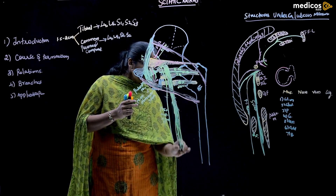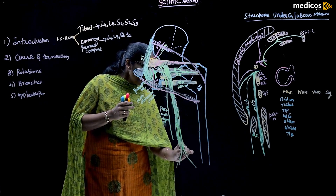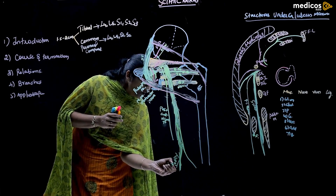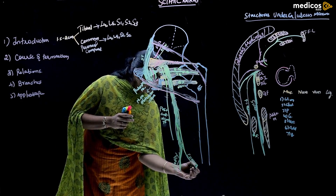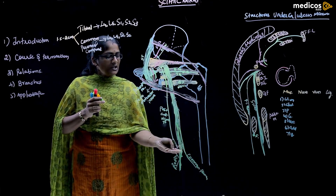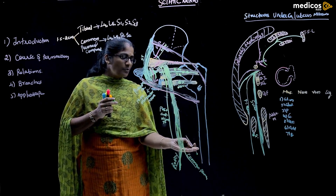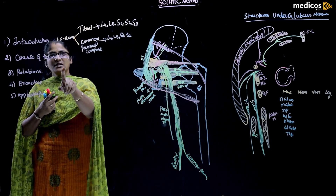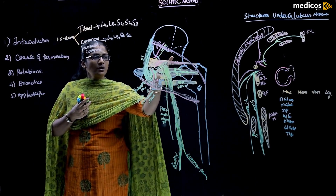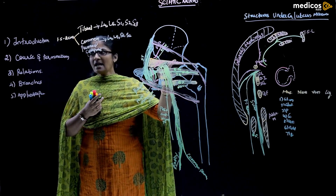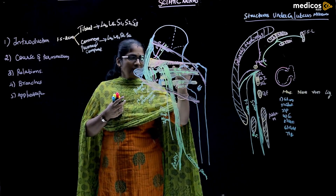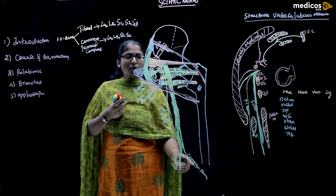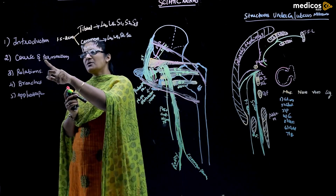It reaches the superior angle of the popliteal fossa, where it divides into its two components. The medial component is the tibial nerve, and the lateral component is the common peroneal nerve. This division occurs at the superior angle of the popliteal fossa, or between the middle third and lower third of the posterior aspect of the thigh.